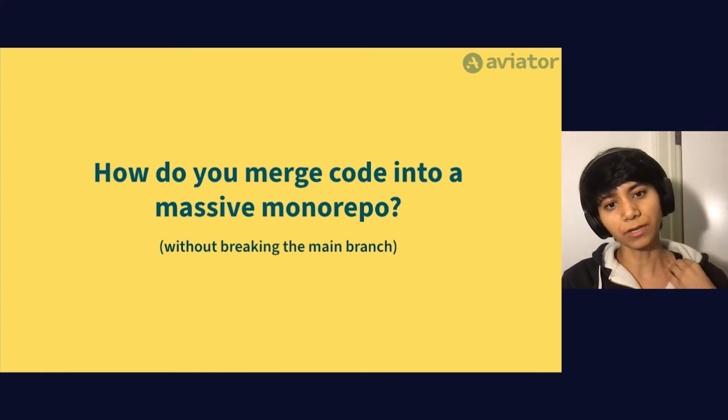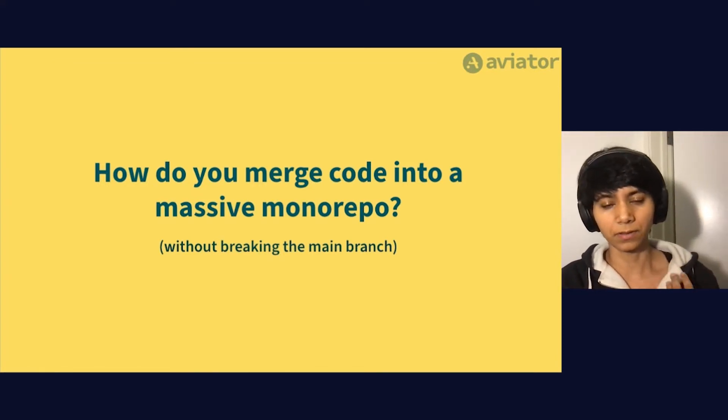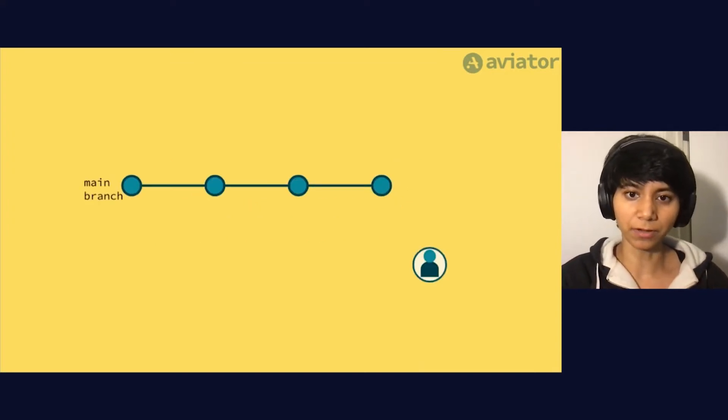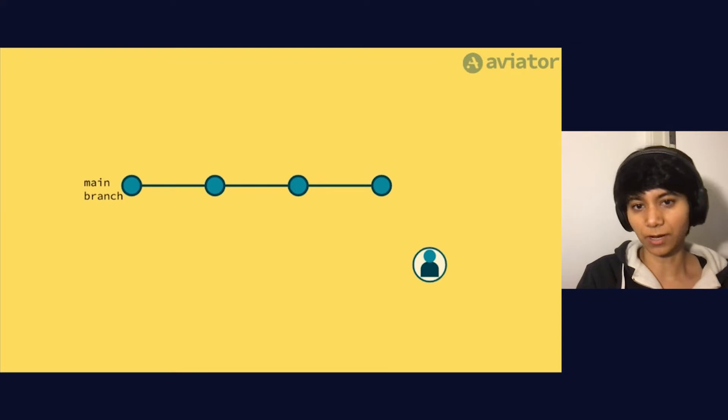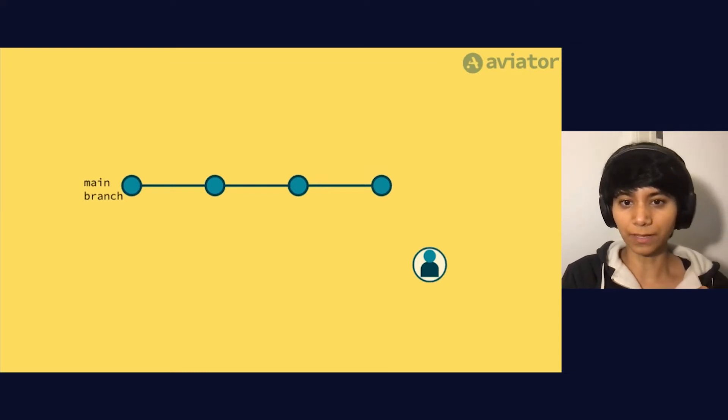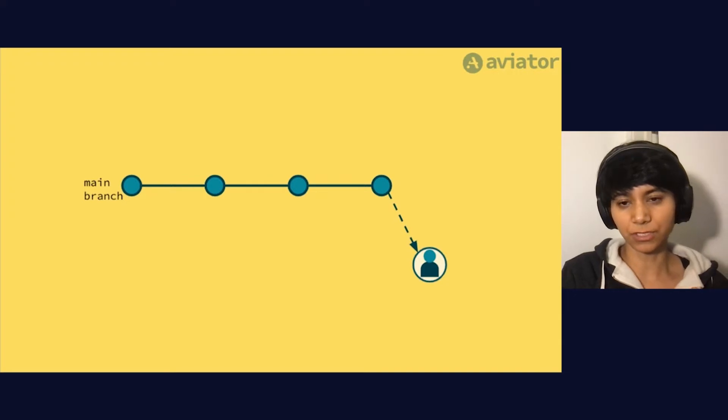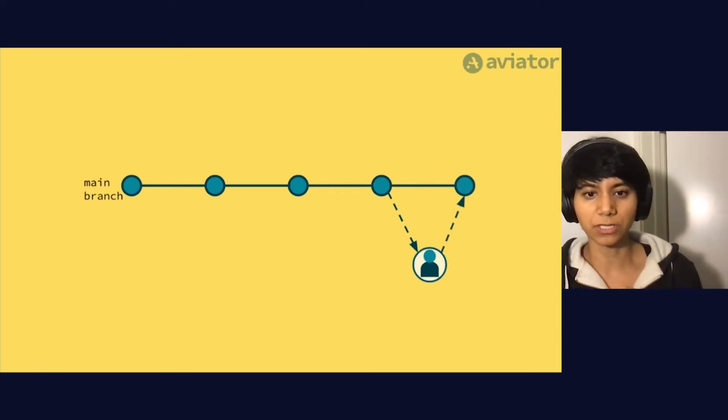So one way you could enforce an always working main branch on the monorepo is just through a manual process. You can say that all developers before they submit code should update to the latest version of the main branch just before they actually commit their code in to ensure that it doesn't break and it all works great.